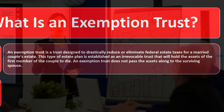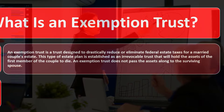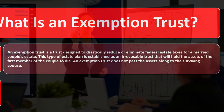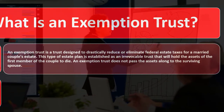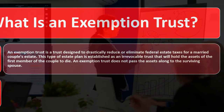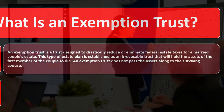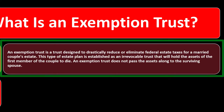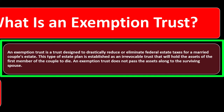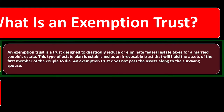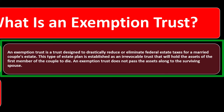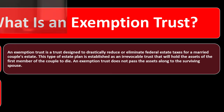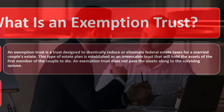On the estate taxes side, it gets complicated to make sure you're maximizing exemptions for both individuals to reduce the estate taxes — the death taxes at the point of death. So you've got the trust concept: one simply to make probate easier, and another to reduce the amount of estate taxes primarily by making sure you're taking advantage of the exemptions available to both individuals.